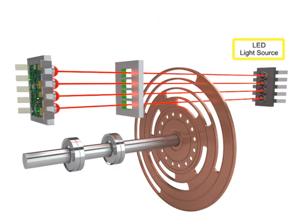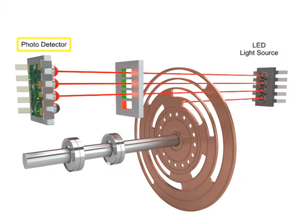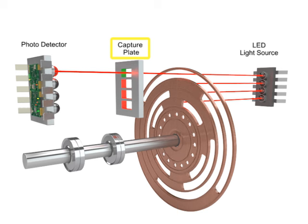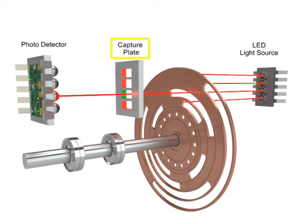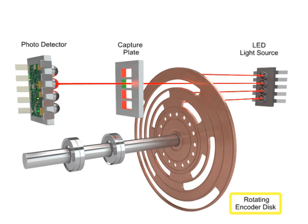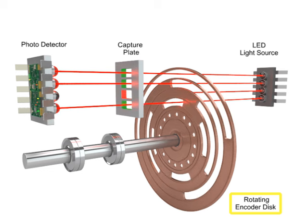A light source located on the opposite side of the photocells passes light through a capture plate. As the encoder disk rotates, light is either transmitted or blocked according to the pattern.